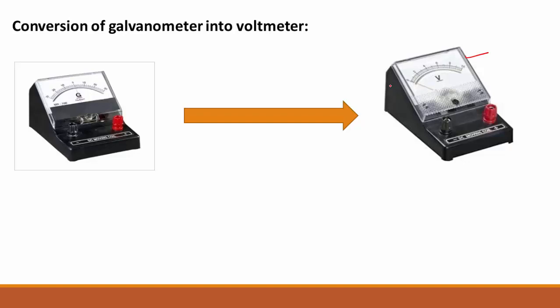Moving coil galvanometer can be converted into voltmeter by connecting a suitable high resistance. This high resistance is mathematically denoted by the symbol R.